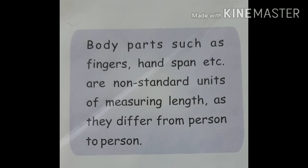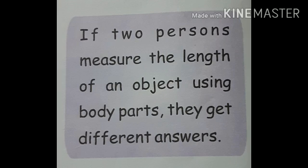Body parts such as fingers, hand span, and others are non-standard units of measuring length because they differ from person to person. If two persons measure the length of an object using body parts, they get different answers. For example, take your study table and measure it using your cubit, then ask your parents to measure it too. You will see it will definitely differ in length between what you measured and what your parents measured.